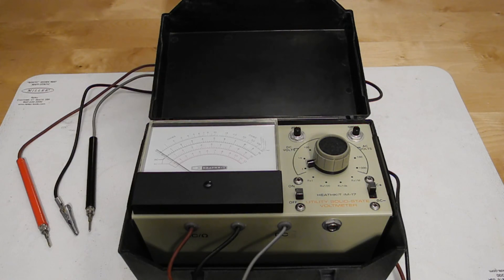It can measure AC and DC voltages and resistance and display them on a large 4.5 inch analog meter. It's housed in a plastic case with a lid that contained the test leads and was battery operated.